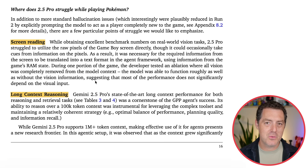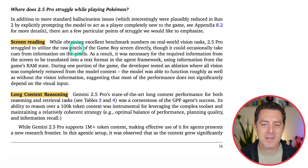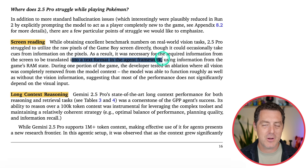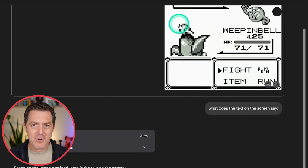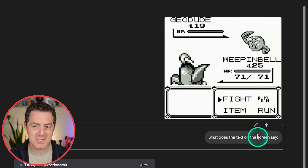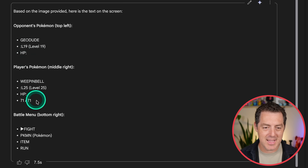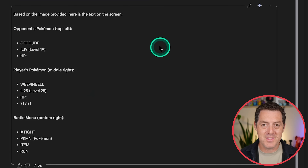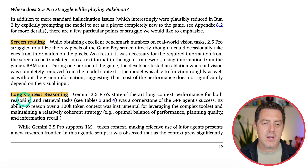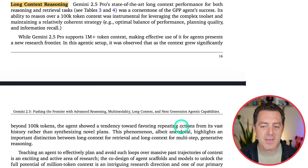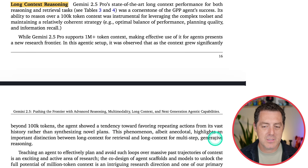But it's not all perfect. While playing Pokémon, it struggled with screen reading — 2.5 Pro struggled to utilize the raw pixels of the Game Boy screen directly, so the required information had to be translated into text format in the agent framework. Interestingly, when I grabbed a screenshot and asked Gemini 2.5 what the text said, it correctly identified Geodude, L19, HP — so I was surprised it had trouble reading that text in the game context. It also struggled with long context reasoning: the agent tended to repeat actions from its vast history rather than synthesizing novel plans, highlighting an important distinction between long context for retrieval versus long context for multi-step generative reasoning.